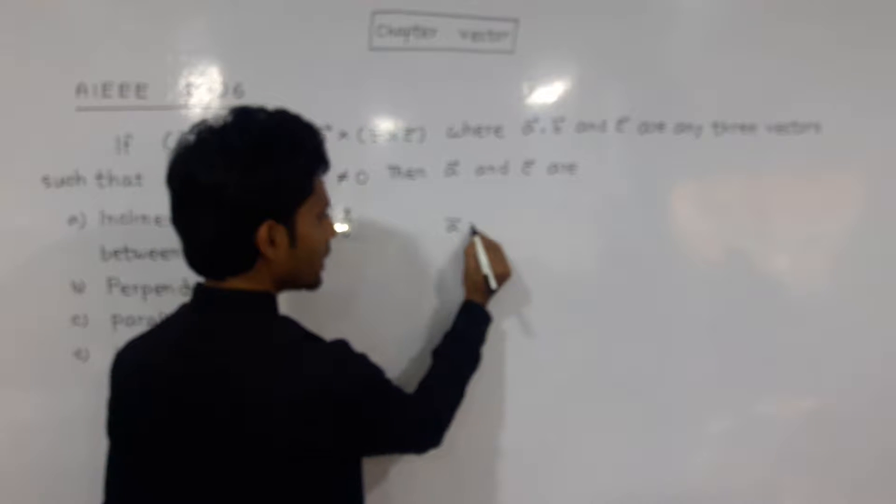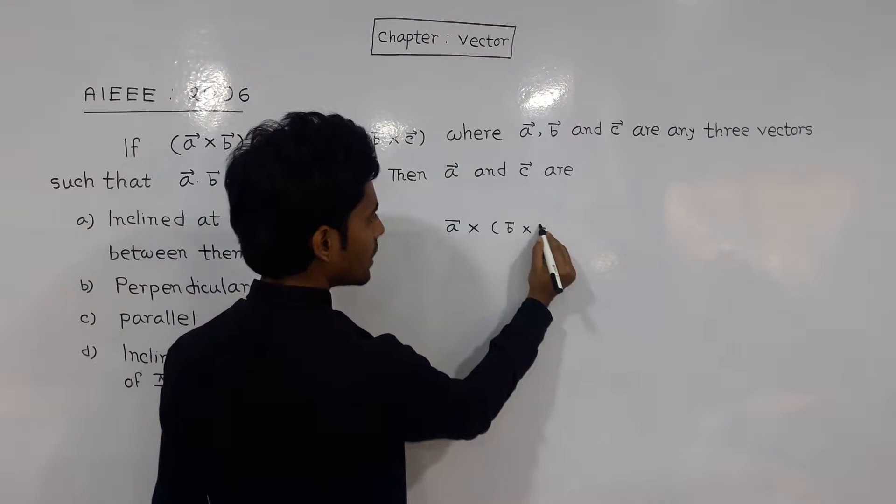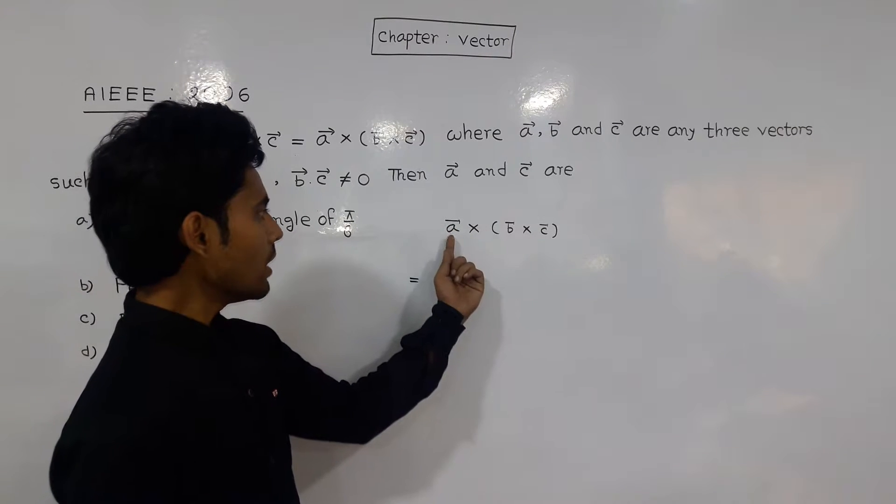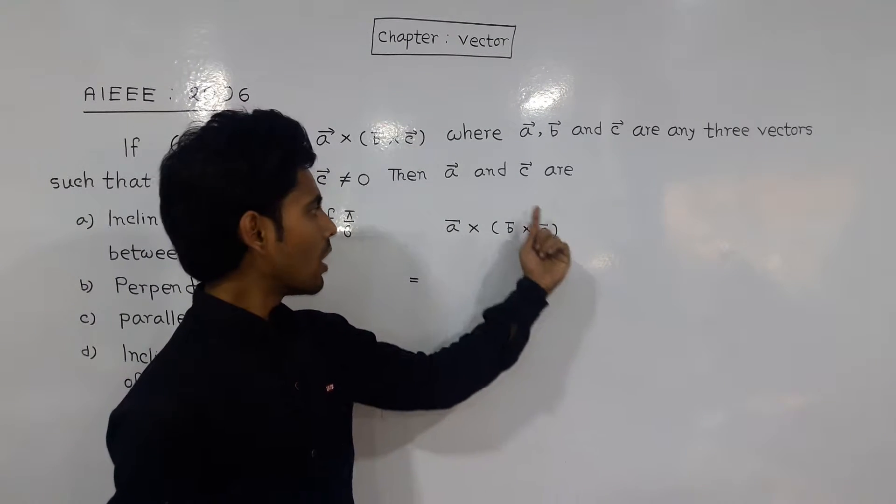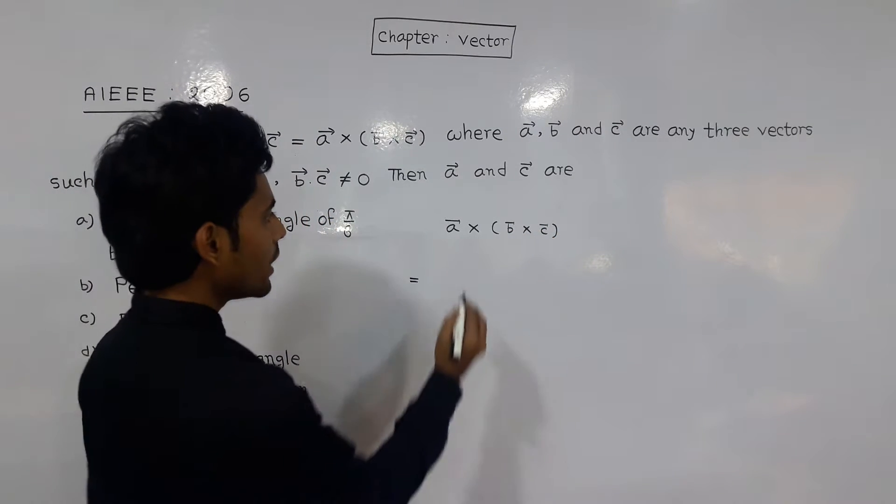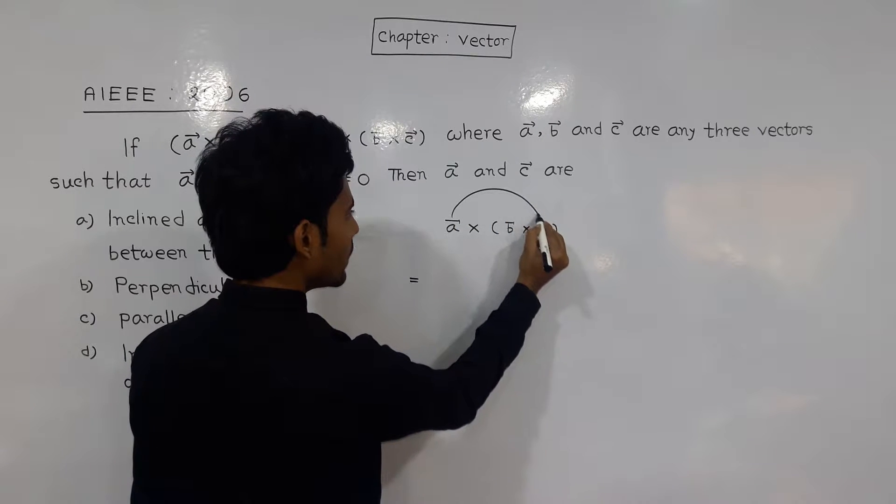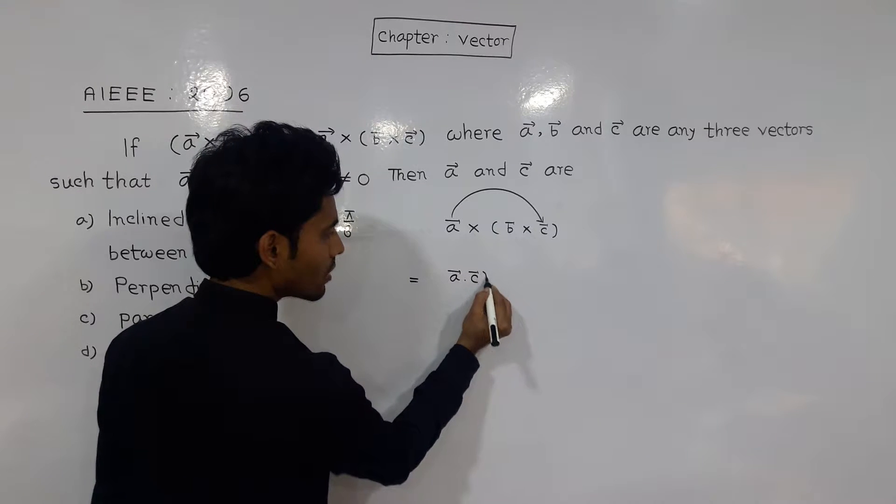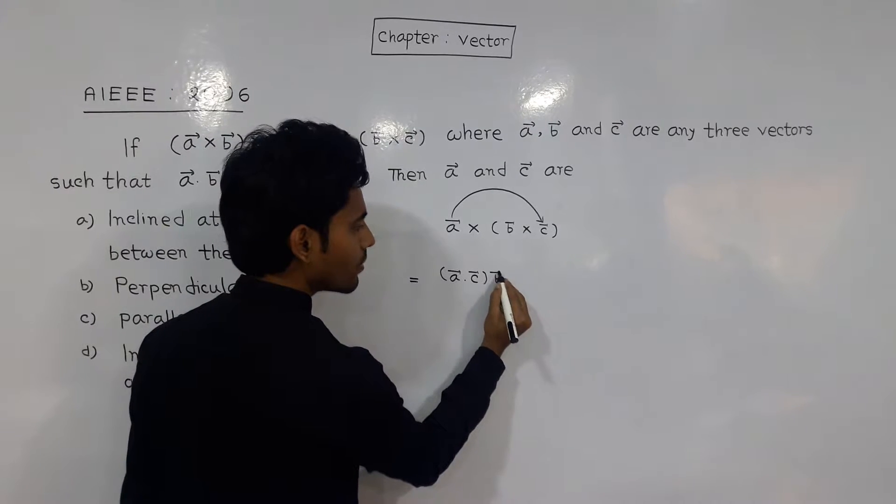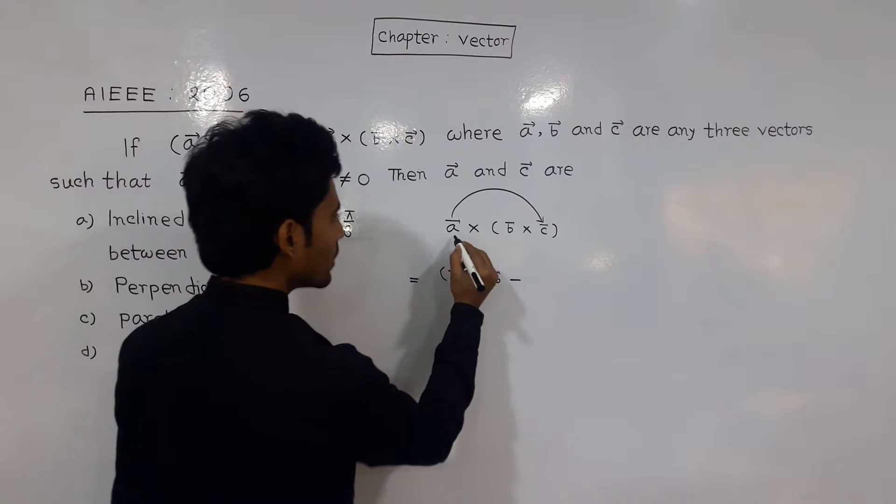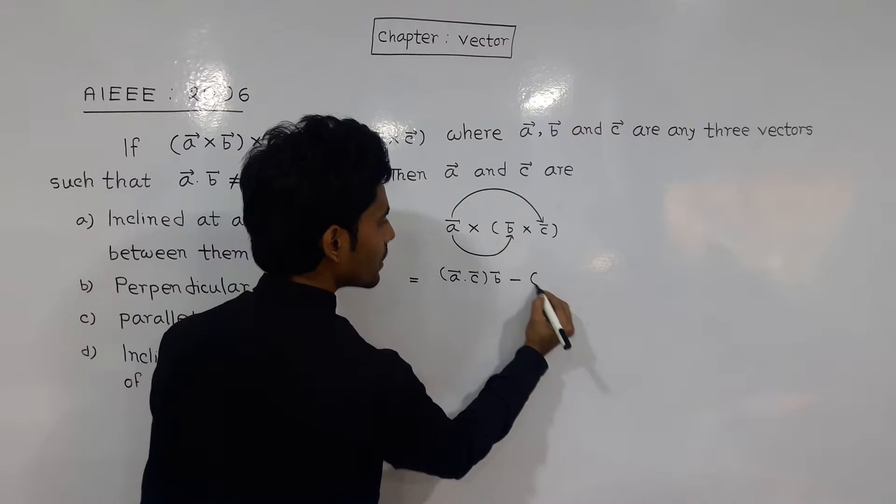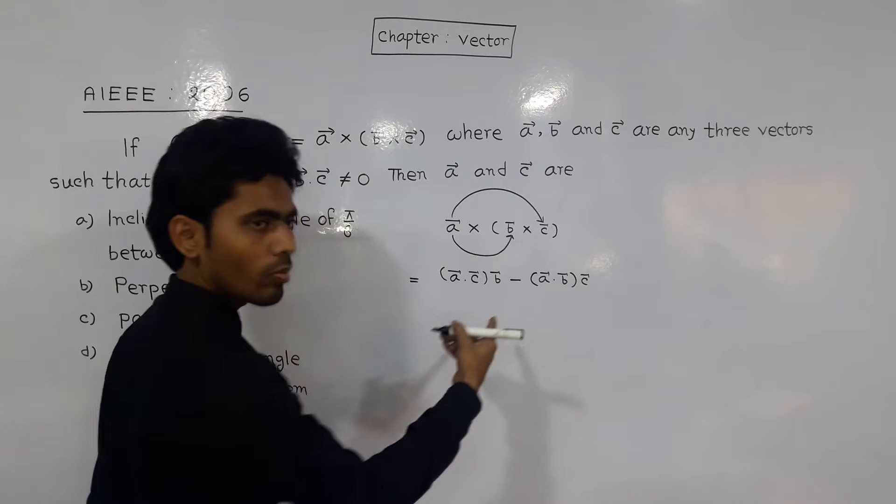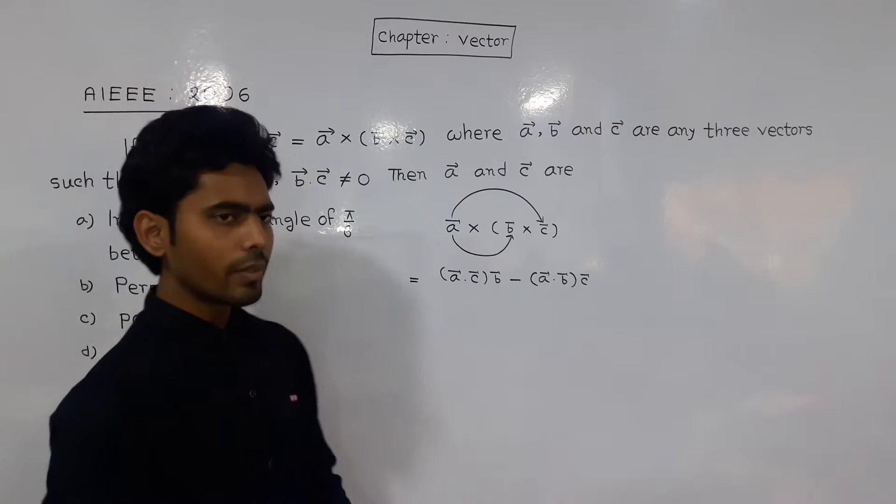Let me use the vector cross product formula. For a cross b cross c, I'll apply the formula: a cross b cross c equals b times a dot c minus c times a dot b. This is the standard vector triple product formula.